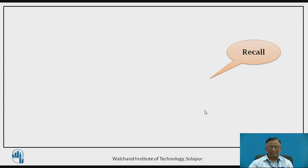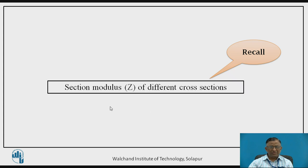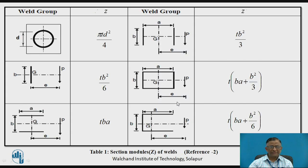Pause the video and recall how to calculate section modulus Z for different cross sections. Here is a standard table from the design data book giving Z values — section modulus values — for different weld cross sections. For example, for a circular weld, Z = π·T·d² / 4, where T is the throat size (since failure occurs along the throat) and d is the diameter of the circular section. For other standard weld sections, the values can be obtained from this table.